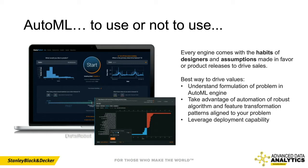AutoML engines evaluating many models are also sensitive to dataset size and composition. You might inadvertently bias the approach by mixing shorter history time series with long history time series in the same project, ending up with error terms that penalize one type of SKU over another. You may need to think about creative ways of grouping time series before they go into AutoML engines.